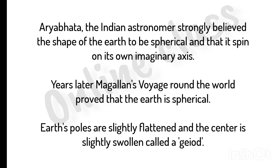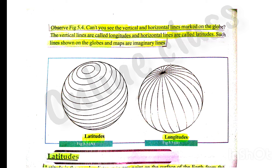In this chapter, we will talk about the first two pages of earth — myth and reality — and the shape of earth. In this chapter, there are two important topics: latitudes and longitudes.